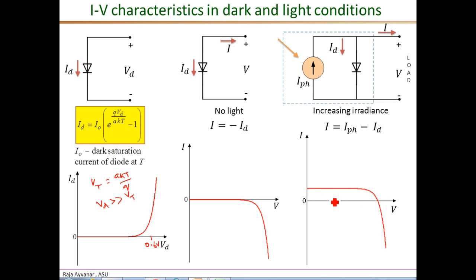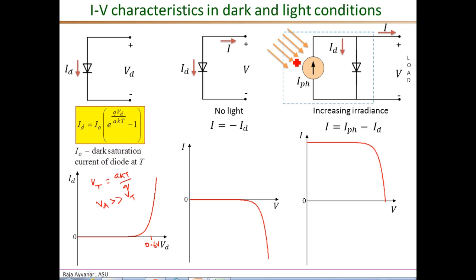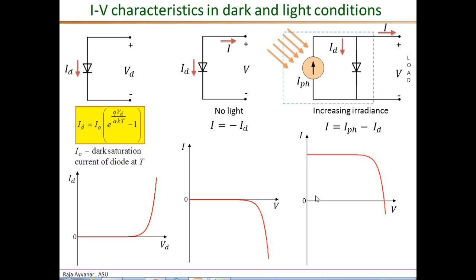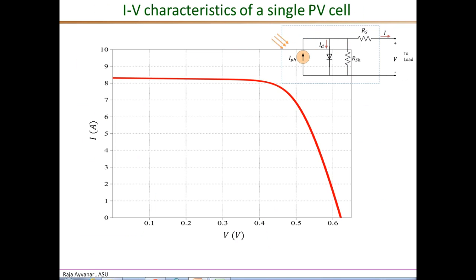As sunlight irradiance is applied, because of the I_photon component the IV characteristic shows a positive current in the external circuit. As irradiance increases further, the current level goes higher and higher, with the maximum irradiance giving the final IV characteristic for a single PV cell. Adding the effect of the series and shunt resistances gives the complete IV characteristic of a single cell under a given irradiance and temperature.